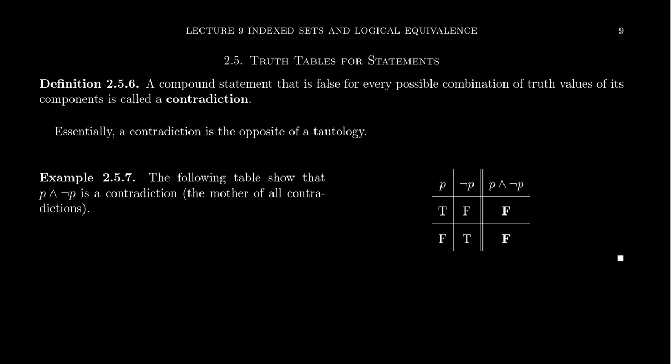I want to then demonstrate to you that the mother of all contradictions, p and not p, is in fact a contradiction. Now, this is a very easy one to demonstrate because there's only one primitive involved in this one.